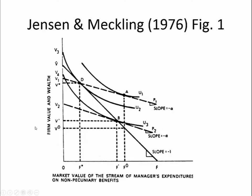How do we figure out how much the manager is going to choose to consume in non-pecuniary benefits? We're looking for a utility indifference curve that is tangent to the budget constraint. Tangent to means touching in only one place. We can see that U2 is tangent to line V-bar-F at point D. This is the spot that would make the manager happiest given the constraint. There are indifference curves that will intersect this line in other places — U3 intersects it lower down — but the manager is happier with curves that are further up and to the right. So they choose to be at D.